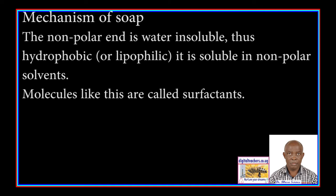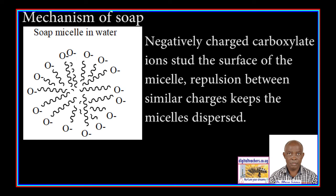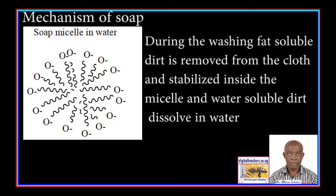Molecules like this are called surfactants. When soap is dissolved in water, soap is dispersed into spherical clusters called micelles. The non-polar ends bond together in the interior while the polar ends project outside into the polar water solvent. The negatively charged carboxylate ions are situated on the surface of the micelles. The repulsion between the similar charges keeps the micelles dispersed. During washing, fat-soluble dirt is removed from the cloth and stabilized inside the micelles, while water-soluble dirt is dissolved in water. This is how dirt is removed from the cloth or the substance being washed.